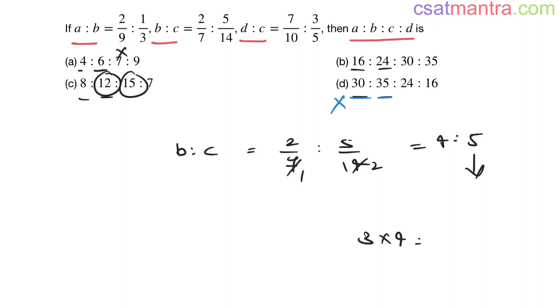Checking: 3 fours are 12, 3 fives are 15. This is also 4 is to 5. Twenty-four to thirty - six fours are twenty-four, six fives are thirty. This is also 4 is to 5, so this option is eliminated.